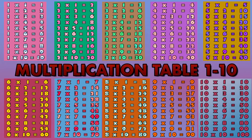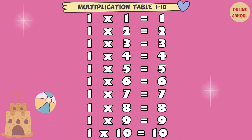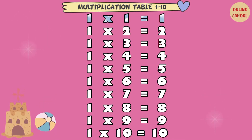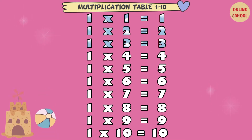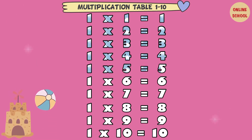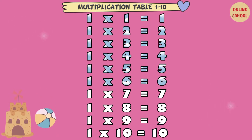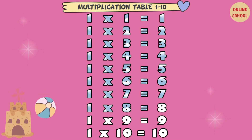Multiplication Tables 1 to 10. 1 x 1 equal 1. 1 x 2 equal 2. 1 x 3 equal 3. 1 x 4 equal 4. 1 x 5 equal 5. 1 x 6 equal 6. 1 x 7 equal 7. 1 x 8 equal 8.